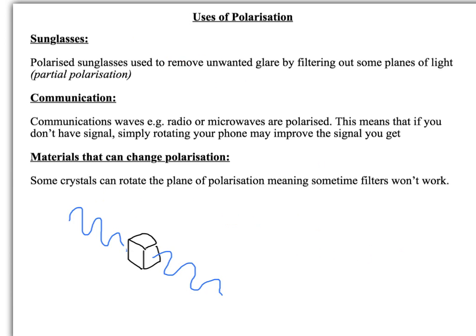Those are polarized waves. Let's have a look at some of the uses for these. Obviously it's important to think about where the science is used. You've probably heard about polarized sunglasses. They can be used to remove unwanted glare because they filter out some of the planes of light that are coming towards your eyes. It's like partial polarization - they only filter out some, but not all of them.